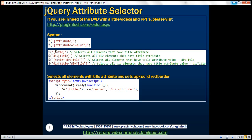Here is the syntax. We specify the name of the attribute within square brackets and pass that to the jQuery dollar function. This is going to find all elements that have the specified attribute. If you want to find elements with a specific attribute and a specific value for that attribute, you would use the second syntax.